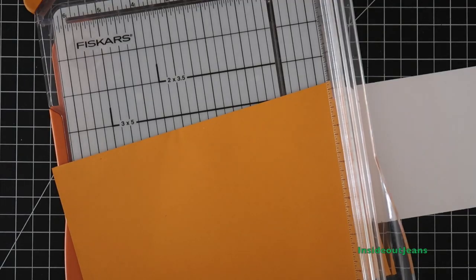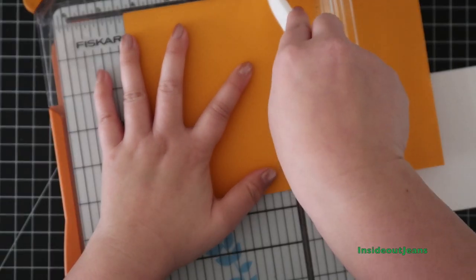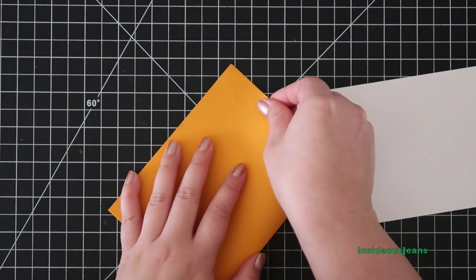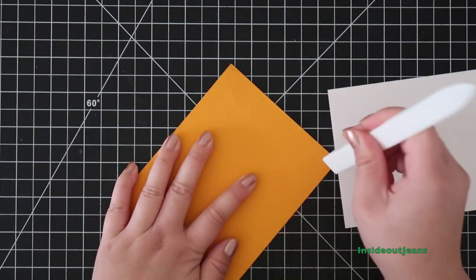Once I have all the images colored, I want to get all the pieces for the card ready. First, I'm using a piece of orange cardstock measured at 8.5 by 5.5 for the card base.